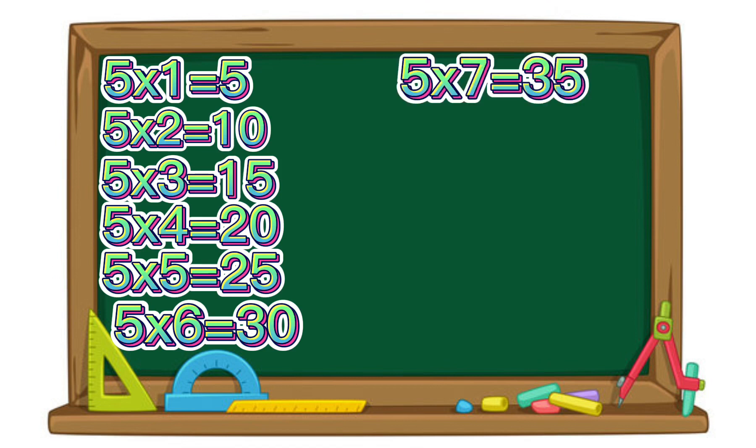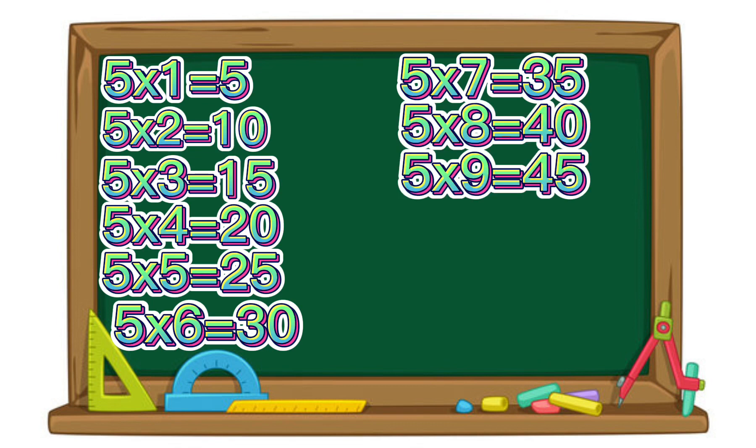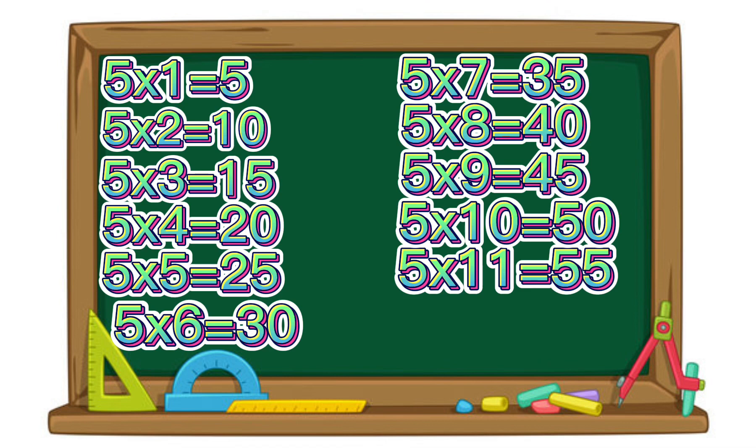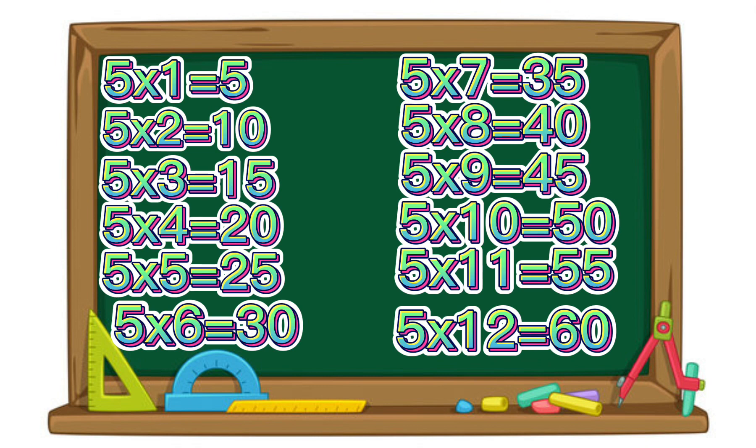5 x 7 equals 35. 5 x 8 equals 40. 5 x 9 equals 45. 5 x 10 equals 50. 5 x 11 equals 55. 5 x 12 equals 60.